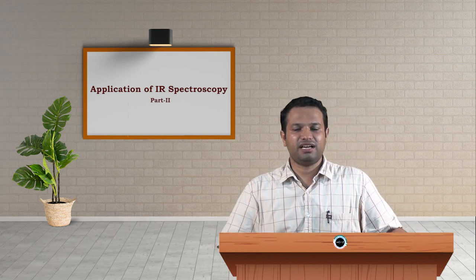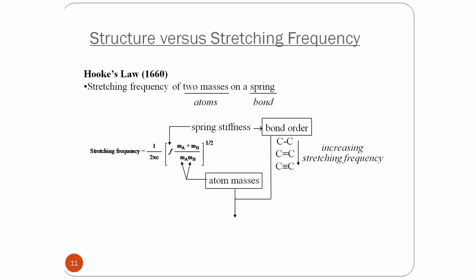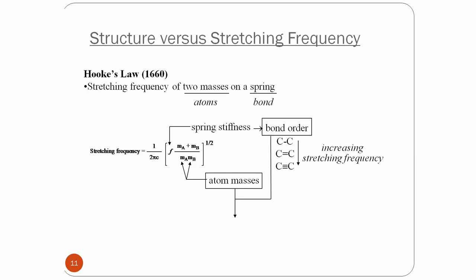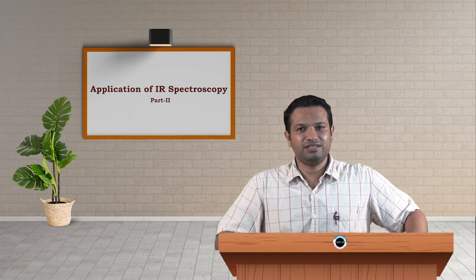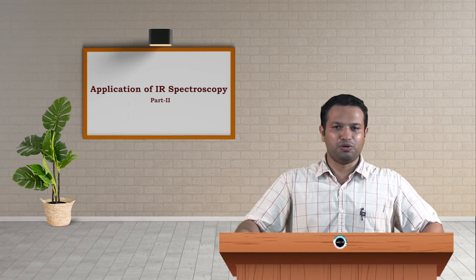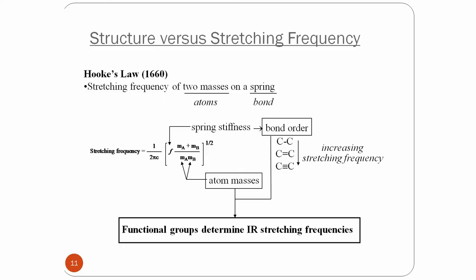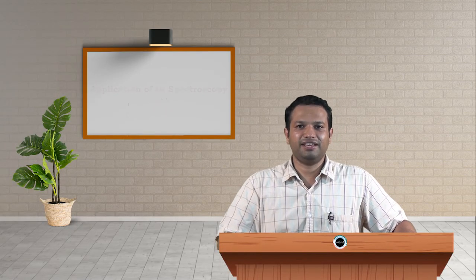Both bond stiffness and atomic mass combined give you the IR spectrum structure and hence the structure of the compound. We can conclude that functional groups determine the IR stretching frequency. The atoms attached to a single atom will give the IR peaks, and therefore we can determine the structure of the particular compound. Thank you very much.